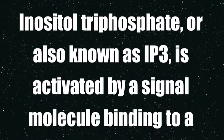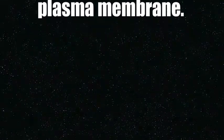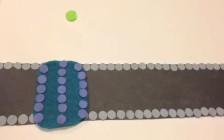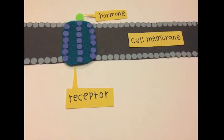Inositol triphosphate, also known as IP3, is activated by a single molecule binding to a receptor on the cell's plasma membrane. In IP3's case, there is a G-linked protein receptor and a hormone as the single molecule.